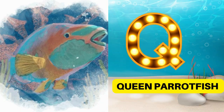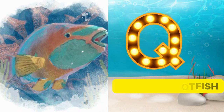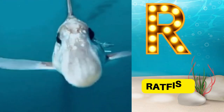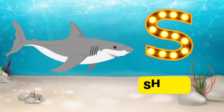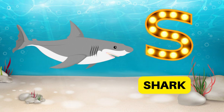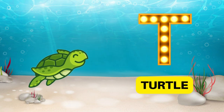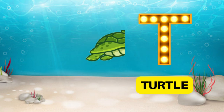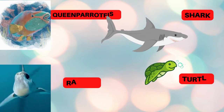Q is for queen parrotfish, cuh cuh queen parrotfish. R is for ratfish, r r ratfish. S is for shark, suh suh shark. T is for turtle, tuh tuh turtle.